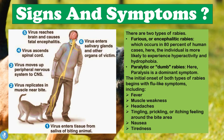There are two types of rabies. The first is called furious or encephalitic rabies, which occurs in 80% of human cases. Here the individual is more likely to experience hyperactivity and hydrophobia, which is a fear of water. The other type is called paralytic or dumb rabies, where paralysis is the dominant symptom. The initial onset of both types begins with flu-like symptoms including fever, muscle weakness, headaches, tingling, prickling or itching around the bite area, nausea, and tiredness.